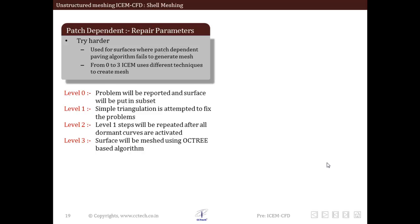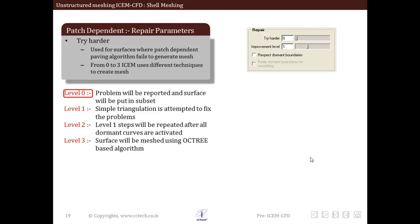Let us move on to discuss patch dependent repair parameters. The patch dependent algorithm is not very robust in generating surface mesh and it generally fails during meshing of surfaces which have complex shapes or which are not properly imported. The try harder option decides what action the mesher should take in case of failure of the meshing algorithm on particular surfaces. There are improvement levels which try to improve the mesh using various smoothening schemes, and the level we set controls which should be used. The try harder level varies from level 0 to level 3.